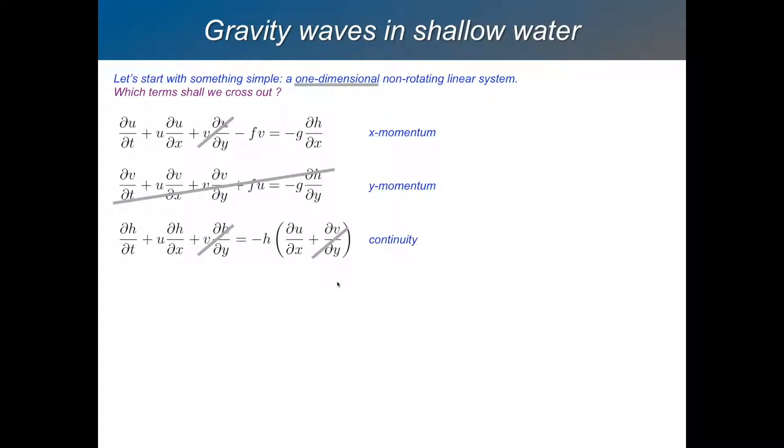Now we're going to go non-rotational. So we just cross out the two Coriolis terms here. And linear now. So we want to cross out all the terms which are quadratic in state variables. For example, the advection terms, this term here, u du by dx, that's quadratic in u. So we cross out those terms.